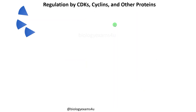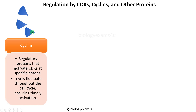Now let us see the regulation by CDK cyclins and other proteins. The first set of proteins are called cyclins. Cyclins are regulatory proteins that activate cyclin-dependent kinases, or CDKs, at specific phases. They are called cyclins because the level of these proteins fluctuate throughout the cell cycle, ensuring timely activation.